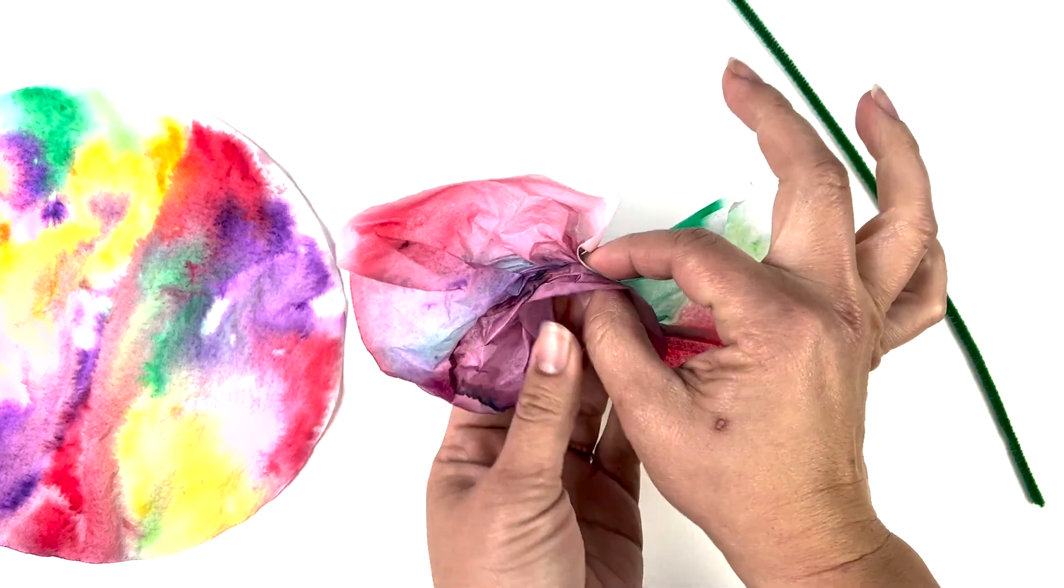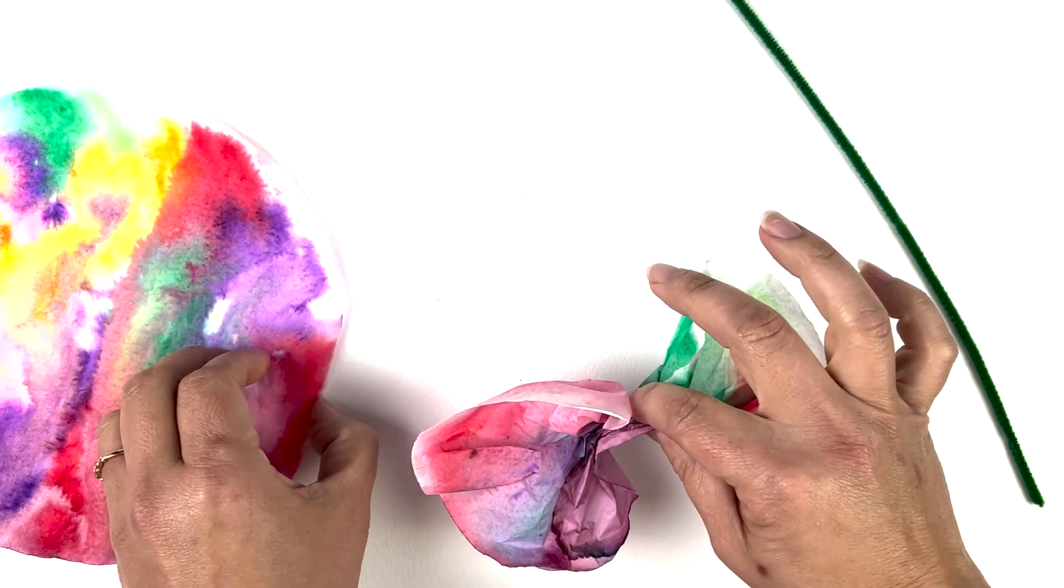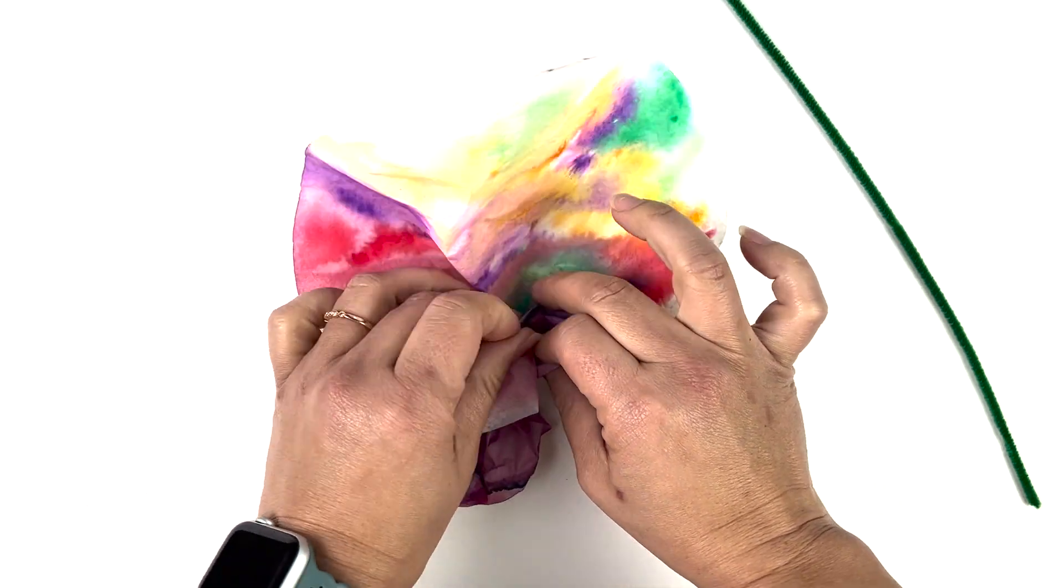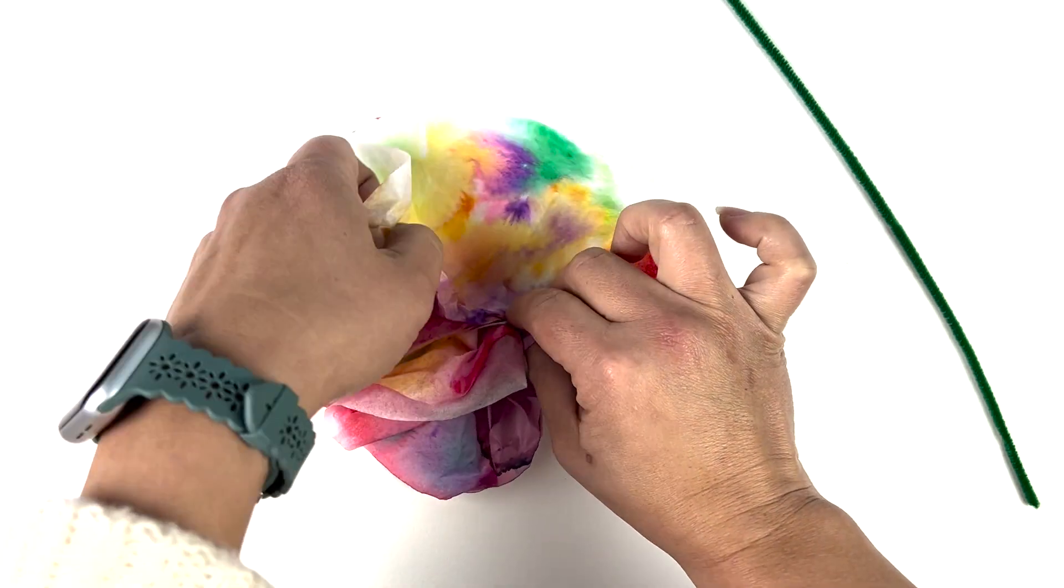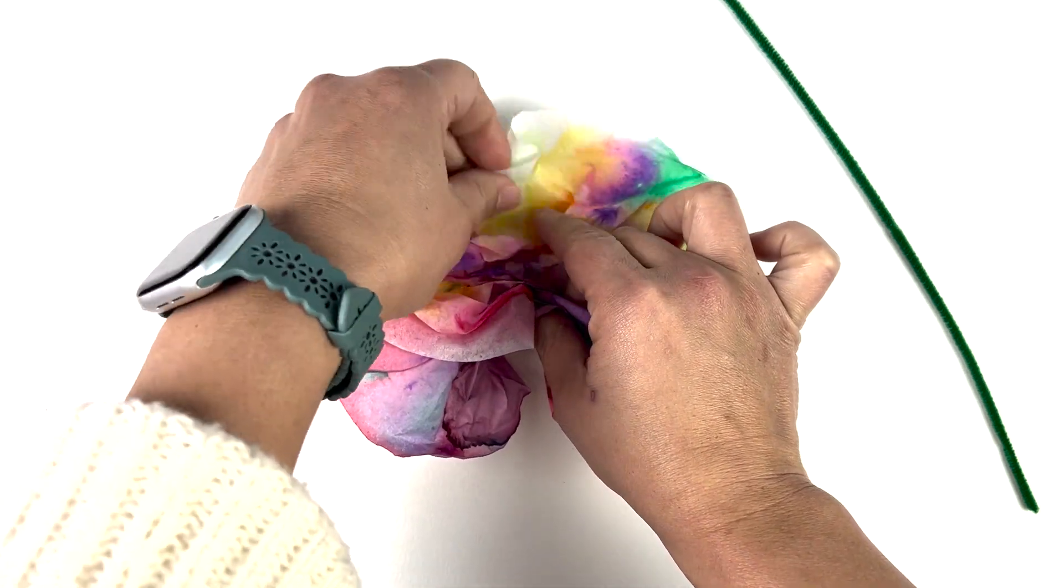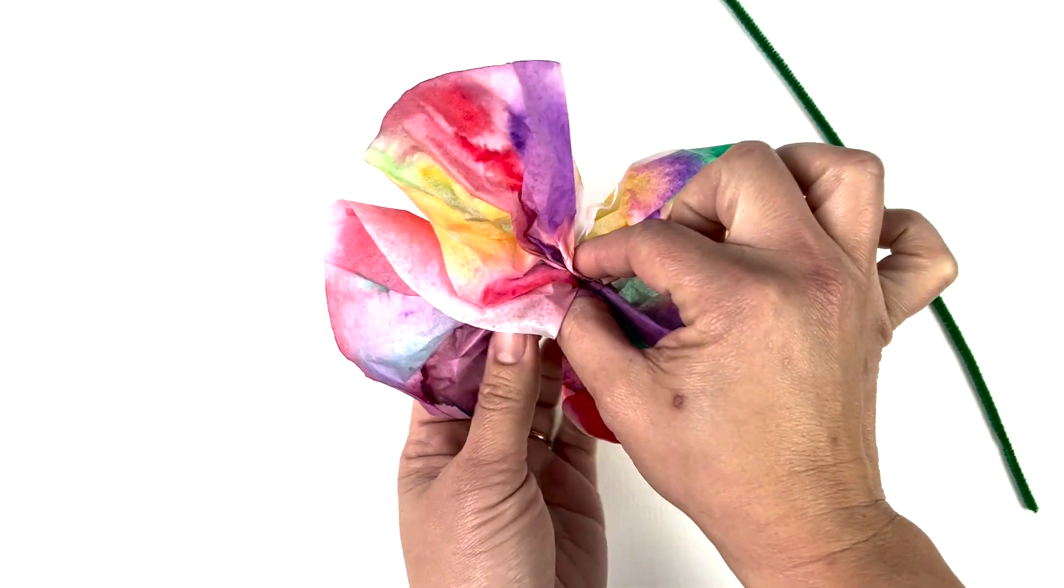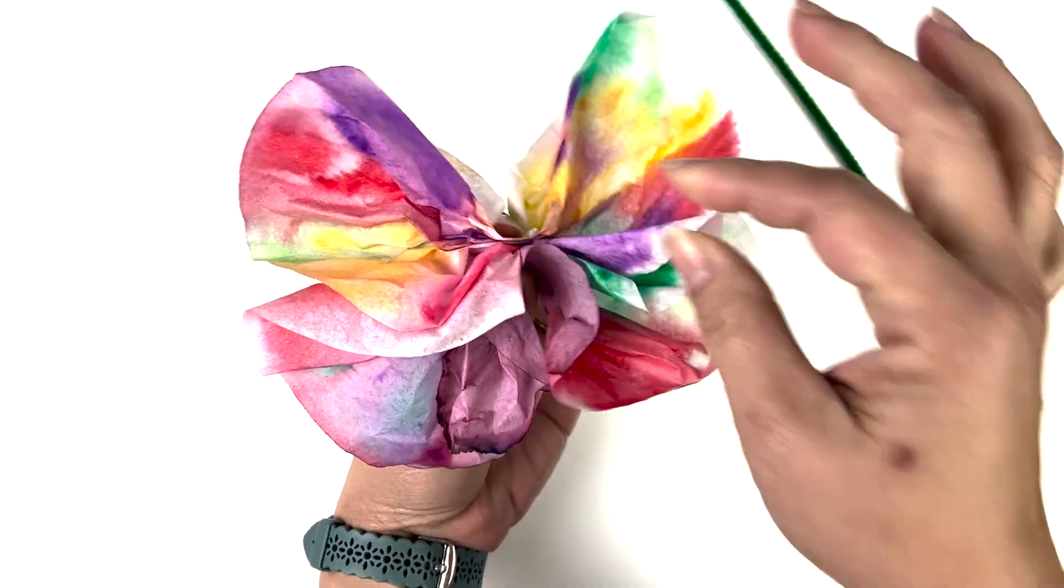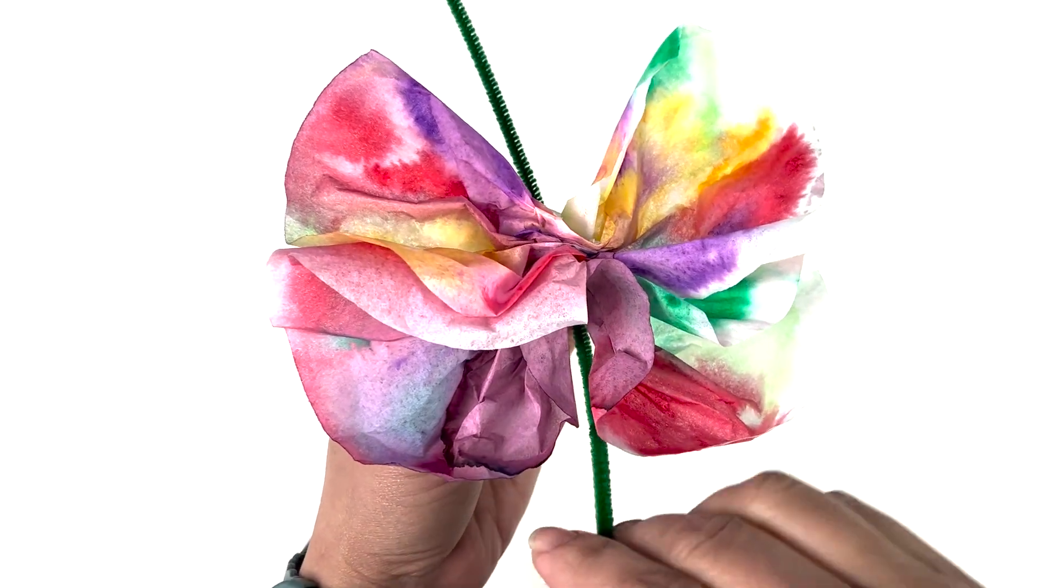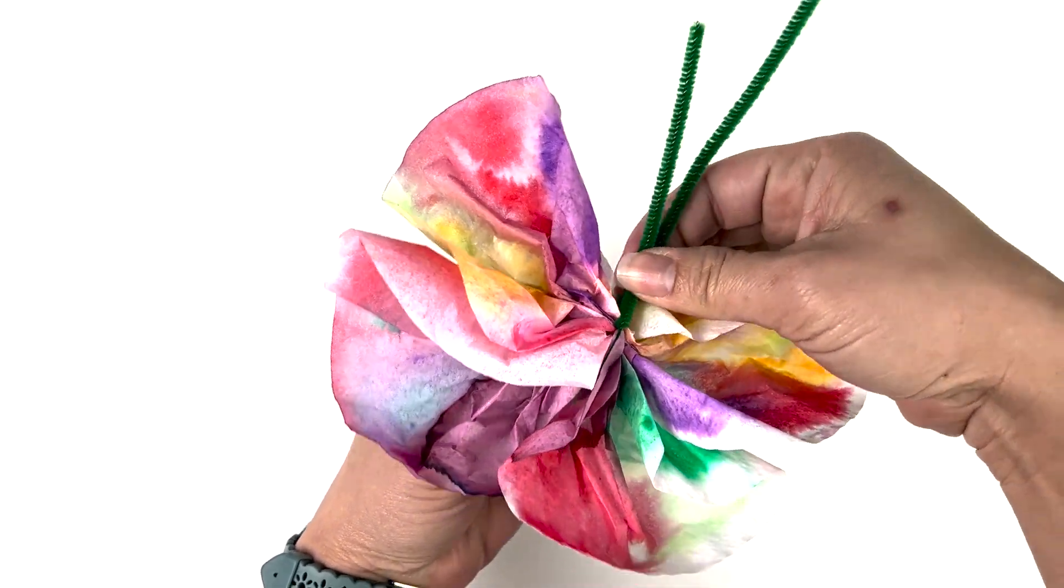This will be one, and you're going to fold the center of the other one together, trying to keep the top. It should look like this one. It's pinched in the center. You take your pipe cleaner and put it around.